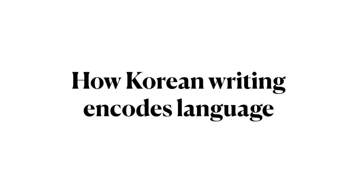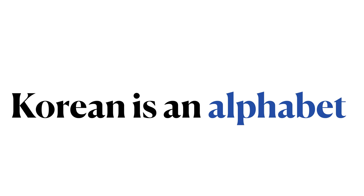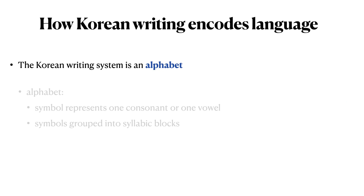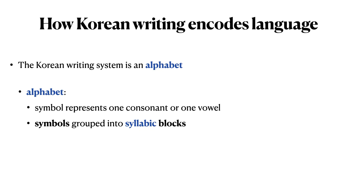So, let's summarize. How does the Korean writing system encode the Korean language? The Korean writing system is an alphabet — a system where each symbol represents a sound, either a consonant or a vowel. Unlike many other alphabets, though, Korean symbols are grouped when written into syllabic blocks, as we see here. Thank you.